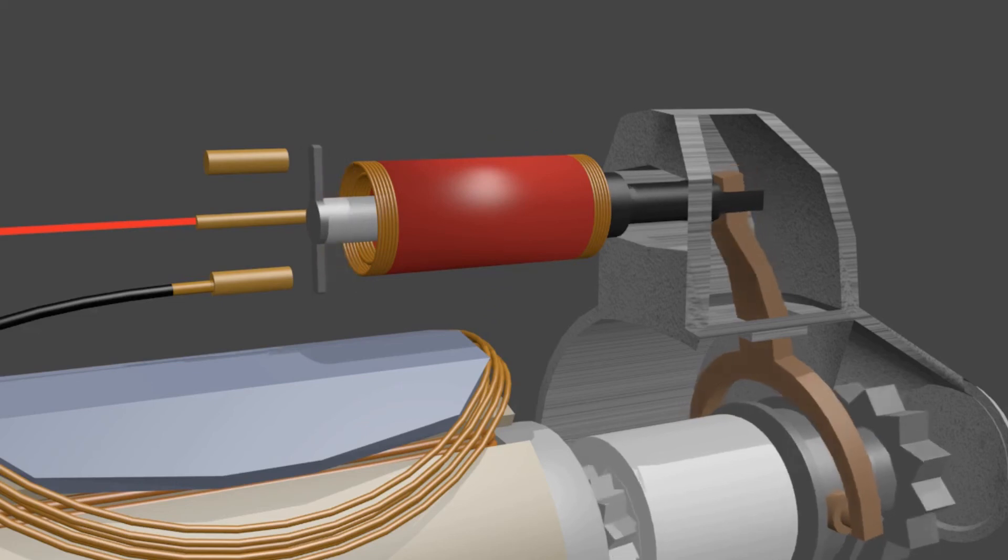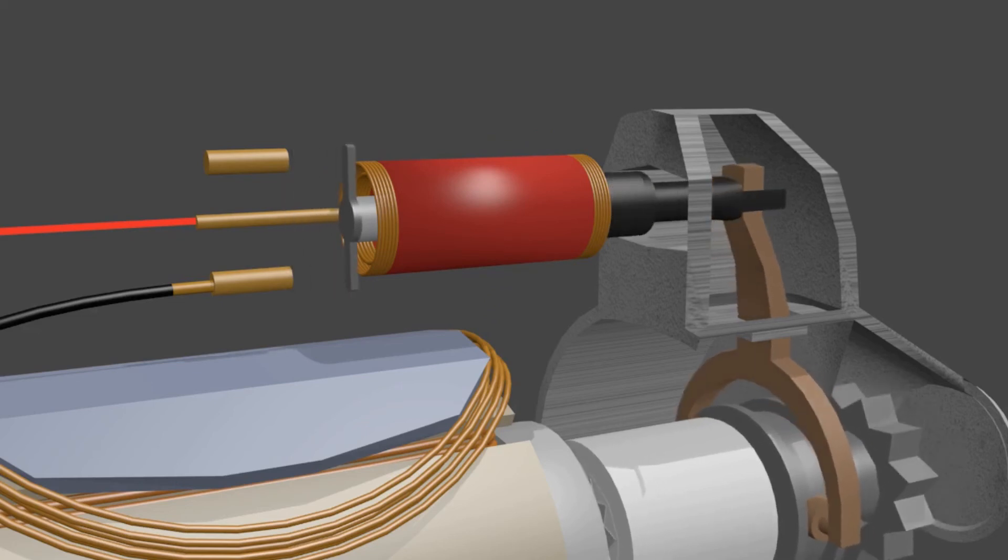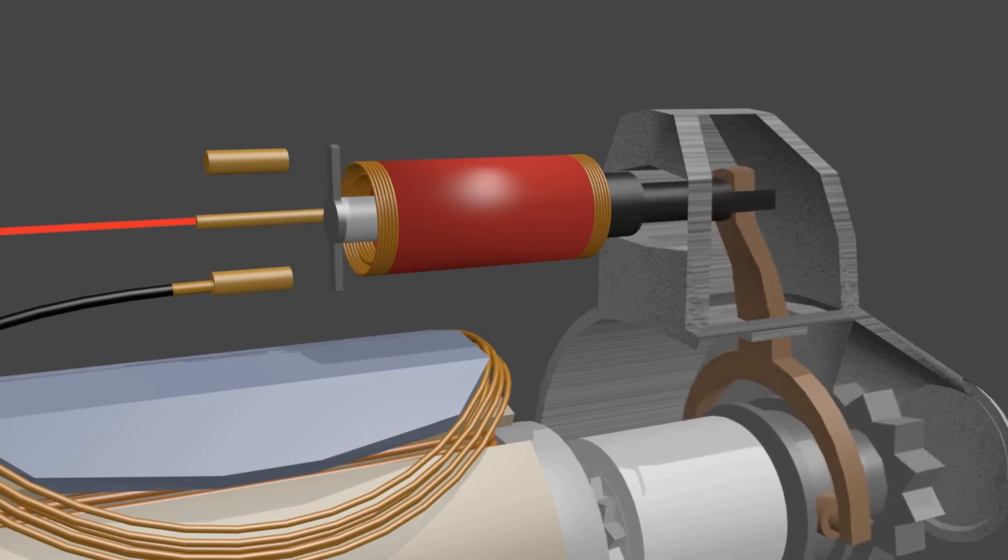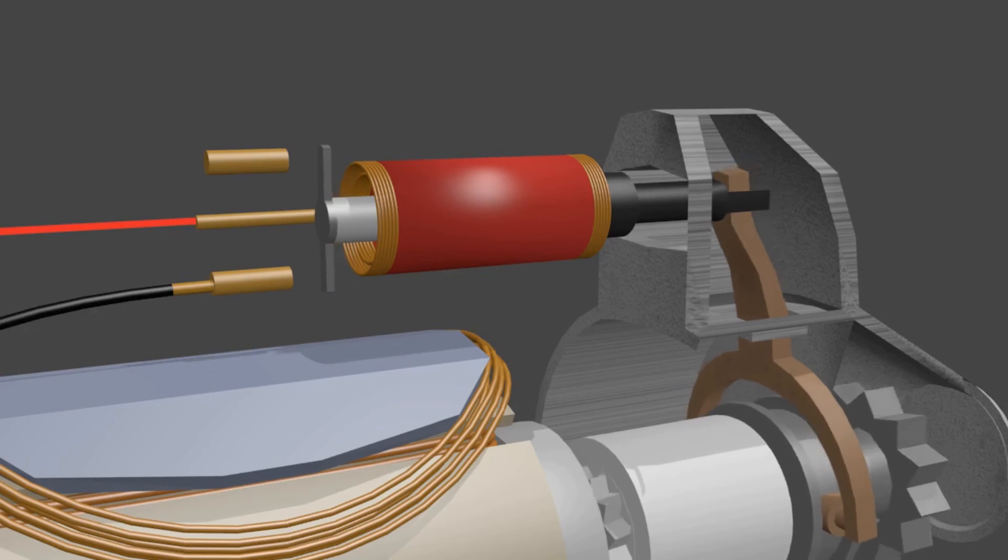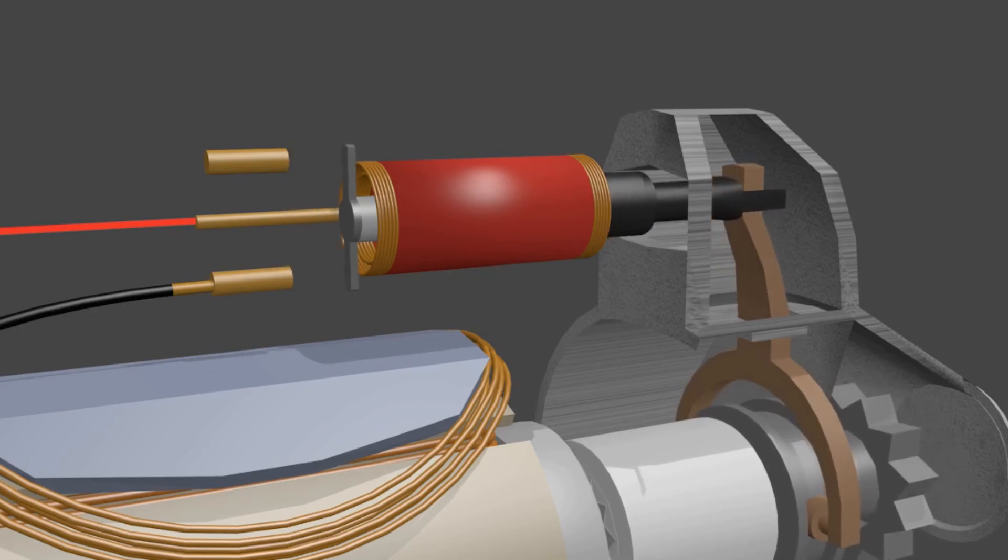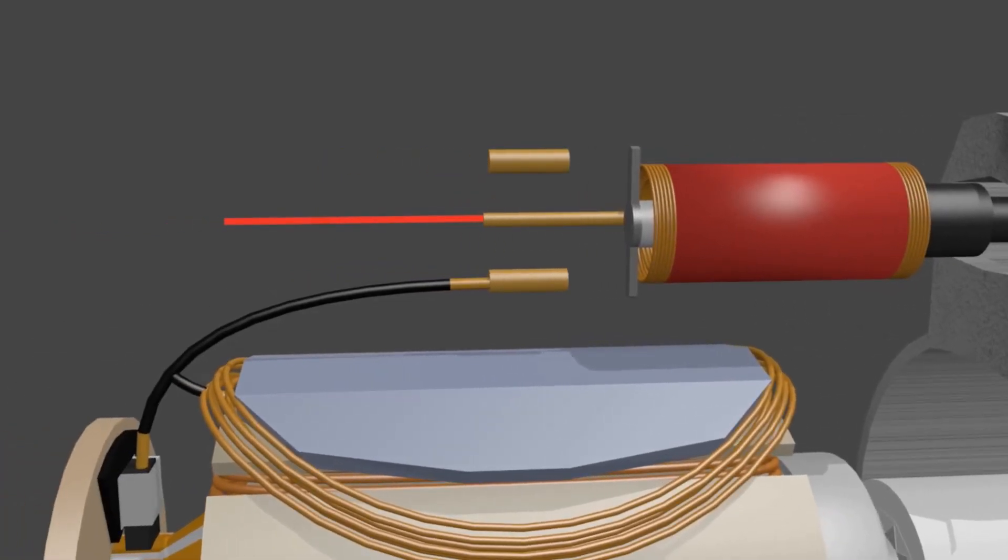This movement of the iron core is used to carry out these two functions. As you can see, when the core moved, the starter gear fork lifted up. So that the starter gear is pushed out. While at the other point, there is a plate. When the core moves, this plate will stick to the two terminals.